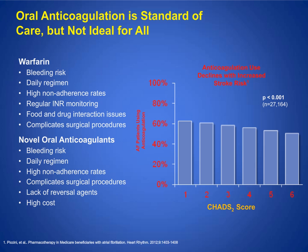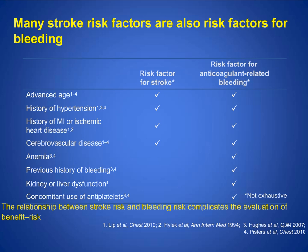Even with the newer oral anticoagulants, you have the same risks. One of the main things I always point out to patients is that these medications lack reversal agents. It's also important to note that many risk factors for stroke are also risk factors for bleeding — advanced age, uncontrolled hypertension, anemia, history of GI bleeding, kidney or liver dysfunction. Patients with coronary stents on antiplatelet agents have a much higher risk of bleeding when combining those medications with anticoagulant therapy.